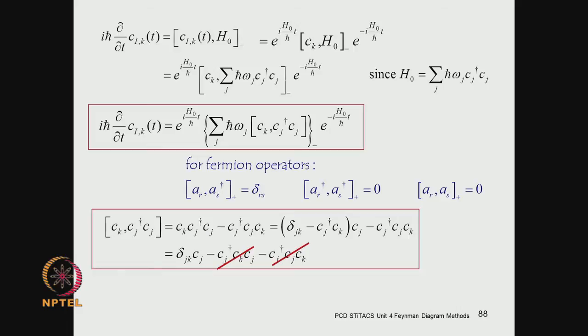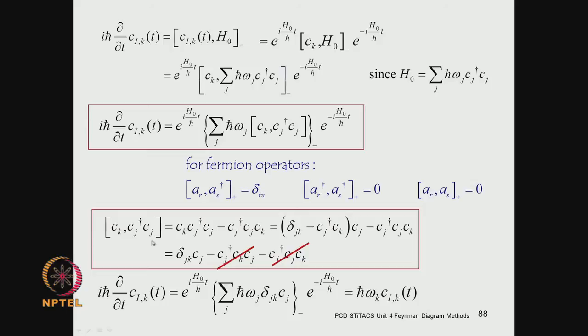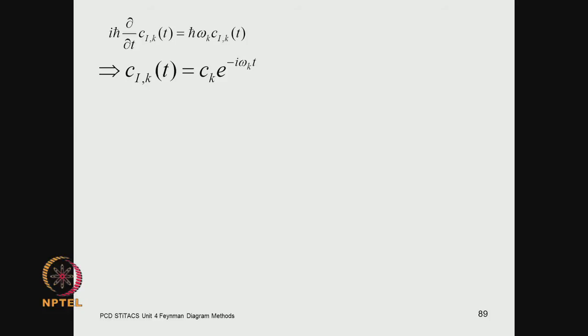This is a straightforward analysis, and the PDF of all these slides is available at the course webpage. Plugging in delta_{jk}*c_j and summing over j, with the Kronecker delta only j equals k survives. The time derivative of c is proportional to c — which has a very simple exponential solution. So the destruction operator at time t is related to the Schrödinger picture destruction operator by an exponential law.